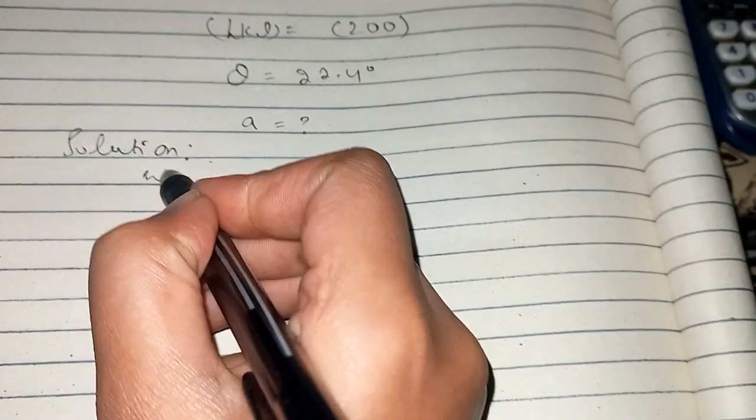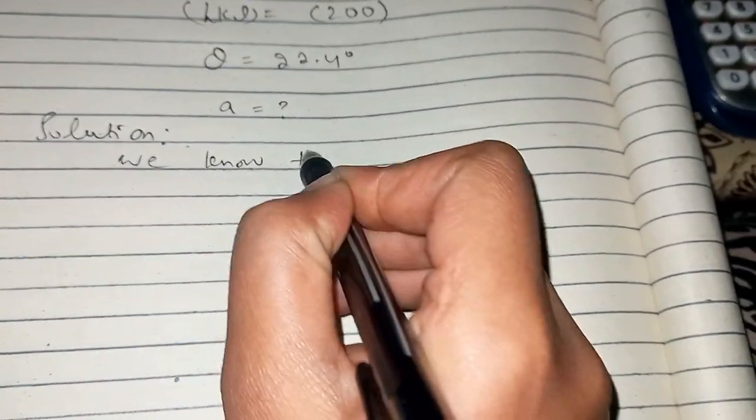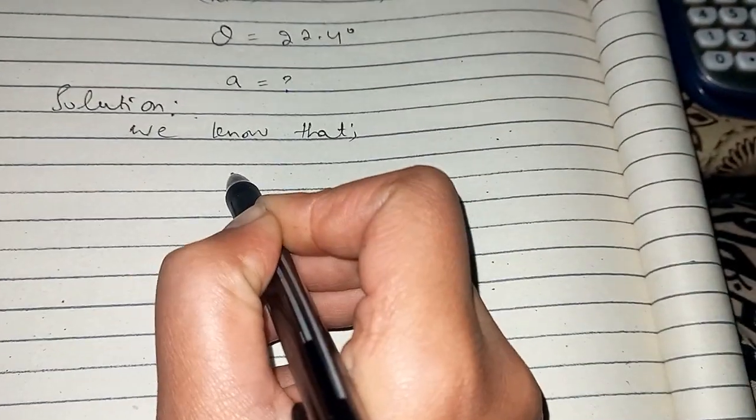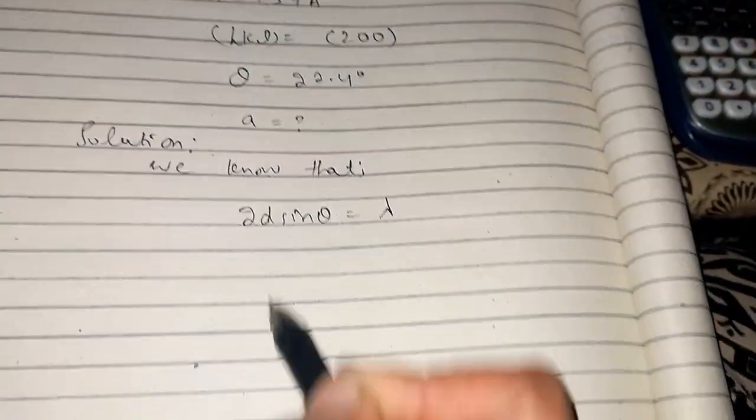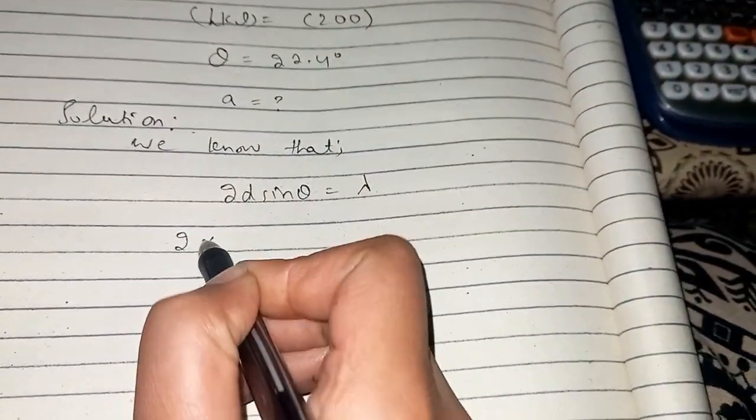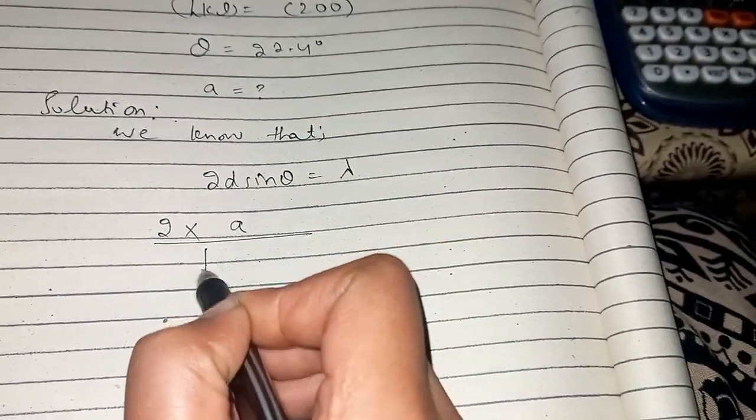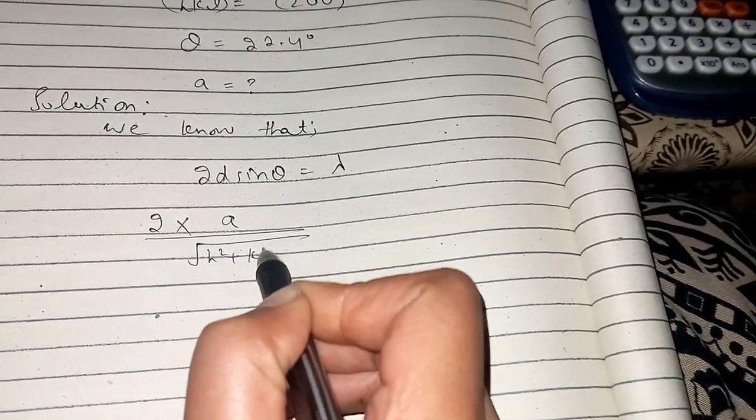Now we know that the Bragg equation is 2d sin theta equals lambda. Here we have the formula which is a divided by the square root of h² + k² + l².